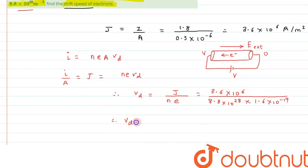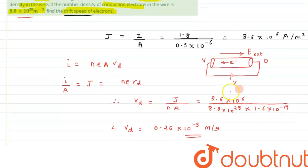Therefore, we can say the value of vd equals 0.26 × 10⁻³ meter per second. So this is the value of vd we are getting. I hope you have understood the concept and thank you for watching.